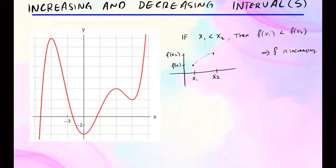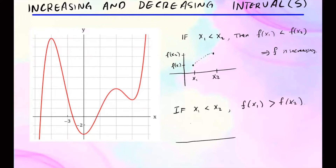Similarly, we can define decreasing in a similar way. We can say if x1 is less than x2, then the function value f of x1 is greater than f of x2. We can think of a picture where x1 is here and x2 is here. So x1 is less than x2, but f of x1 is greater than f of x2 — f of x1 is up here and f of x2 is less than that, somewhere here. So something like this we can consider decreasing — f is decreasing.